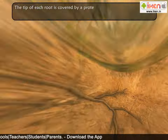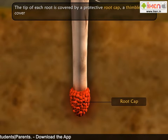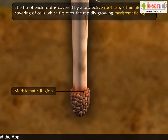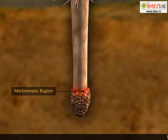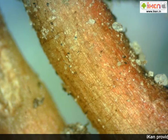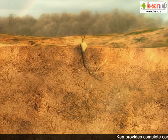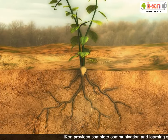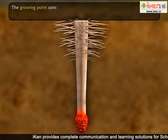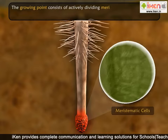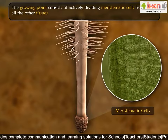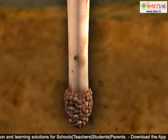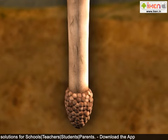Let us look at the different parts of a root. The tip of each root is covered by a protective root cap — a thimble-shaped covering of cells which fits over the rapidly growing meristematic region, that is, the calyptrogens. The outer part of the root cap is rough and uneven because its cells are constantly being worn away as the root pushes through the soil. The growing point consists of actively dividing meristematic cells from which all the other tissues of the root are formed. The growing point also gives rise to new root cap cells to replace the ones worn away.